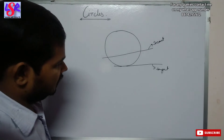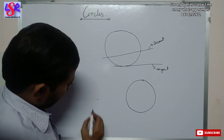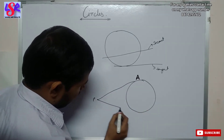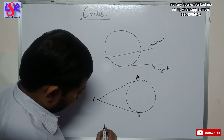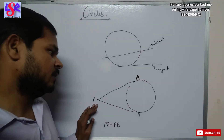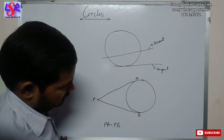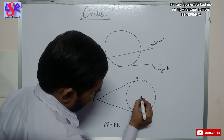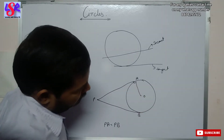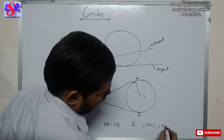Now we have some properties of a tangent. If we have a circle and from any exterior point P we draw two tangents — let these be PA and PB — then PA is equal to PB. Tangents from any external point to the circle are always of equal length. Also, if the center is O, then the radius to the tangent is always perpendicular; that is, the angle at the point of tangency is always 90 degrees.